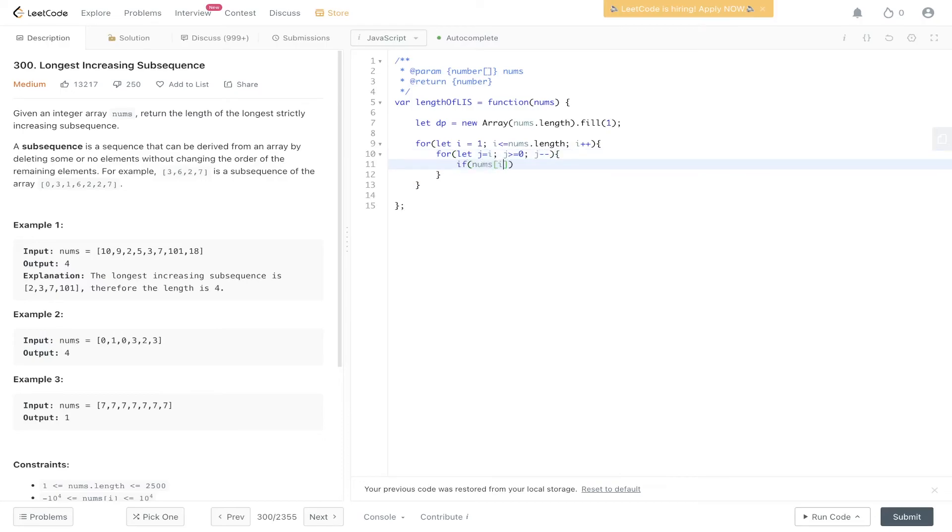If nums at i, the current value we're on, is greater than nums at previous, then we can say DP at i is equal to math.max, DP at i, and DP at j plus 1.